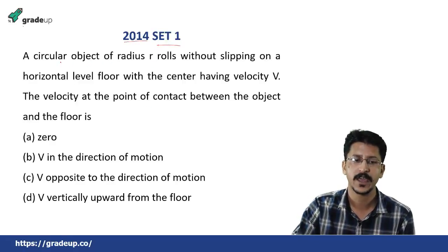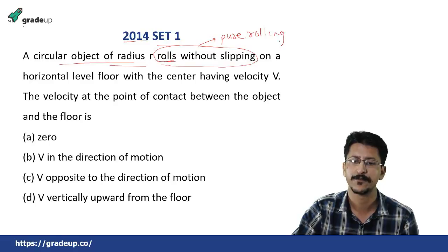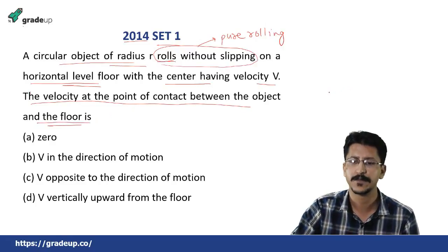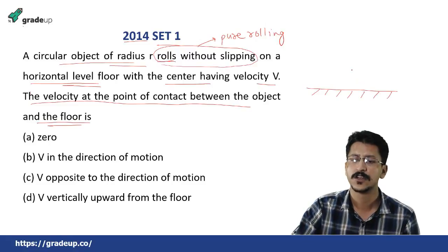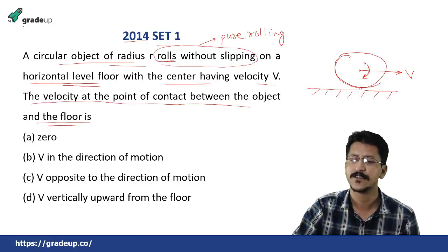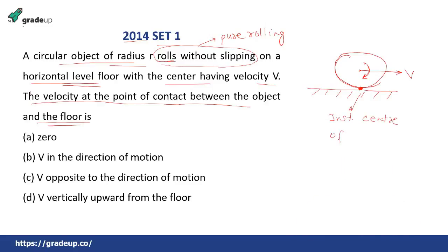The next question appeared in GATE 2014 Set 1. A circular object of radius r rolls without slipping — this is the case of pure rolling — on a horizontal level floor with the center having velocity v. It asks the velocity at the point of contact between the object and the floor. The point of contact is the instantaneous center of rotation, so its velocity is zero. The answer is option A.